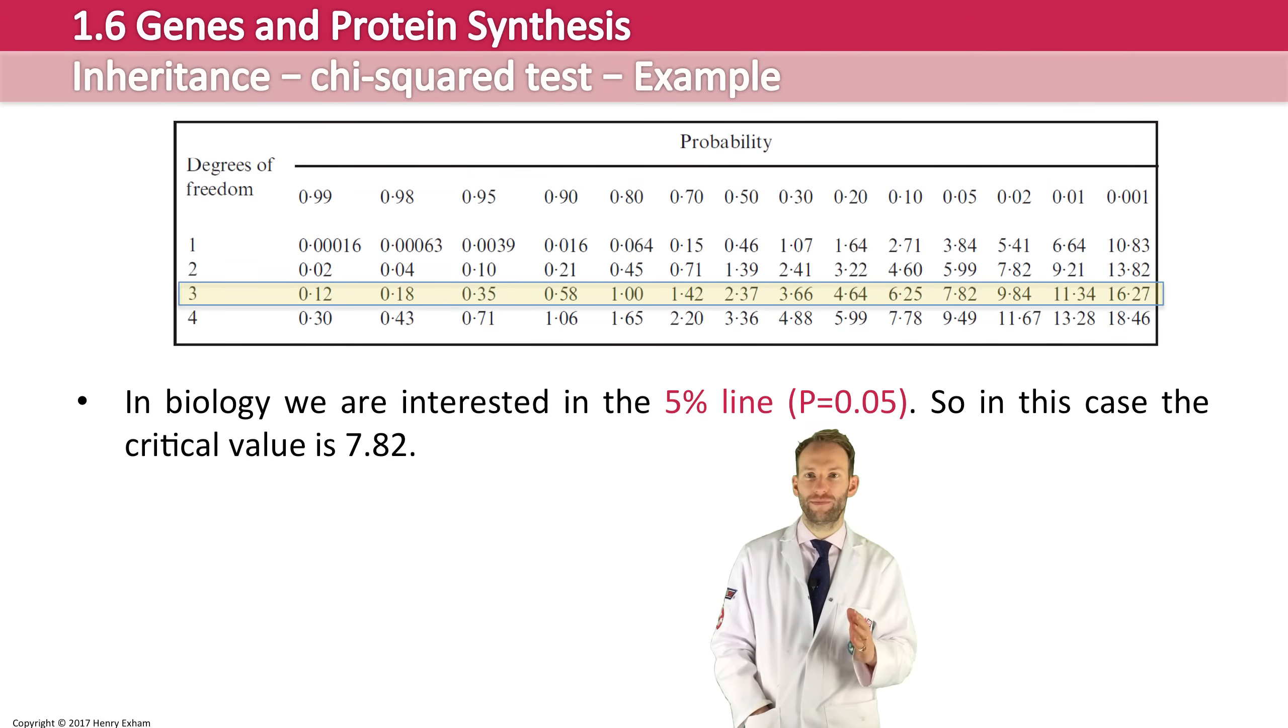So in this case, if we look at that column, which is 0.05, which equates to 5%, then the critical value is 7.82 for this experiment. What that means is that if our value is higher than this, then there is less than 5% chance that the difference between expected and observed is down to chance. A really, really small chance that it's down to chance. We're really, really certain that there's something wrong here, something different than what we expected.